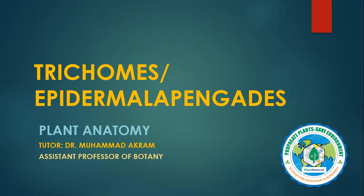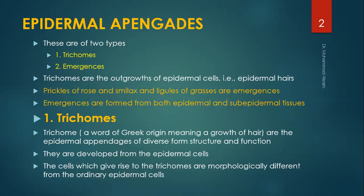Trichomes or epidermal appendages. There are two types of epidermal appendages: the trichomes and the emergences. Trichomes are the outgrowth of the epidermal cells, known as the epidermal hairs. Prickles of rose, some legumes and grasses are emergences. The emergences are formed from both epidermal and sub-epidermal tissues.